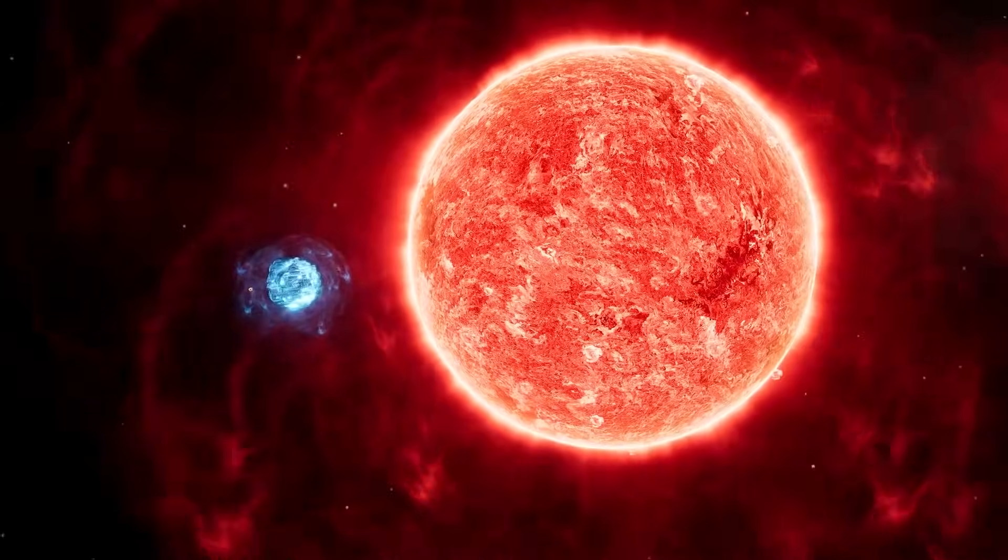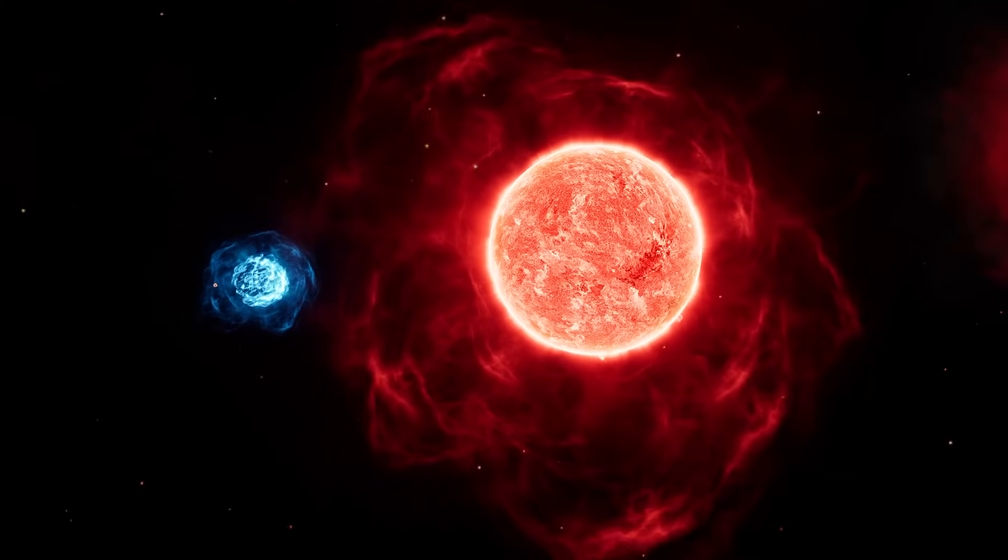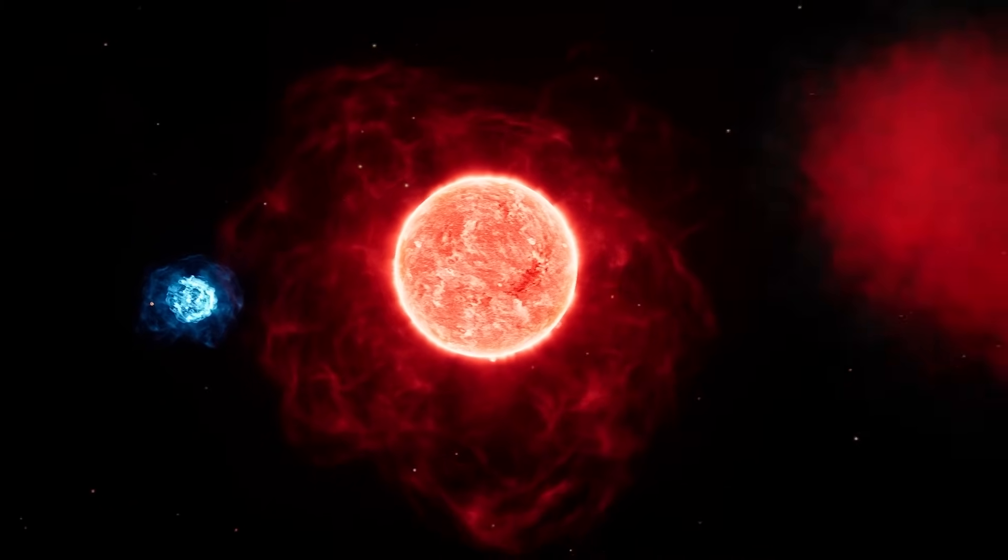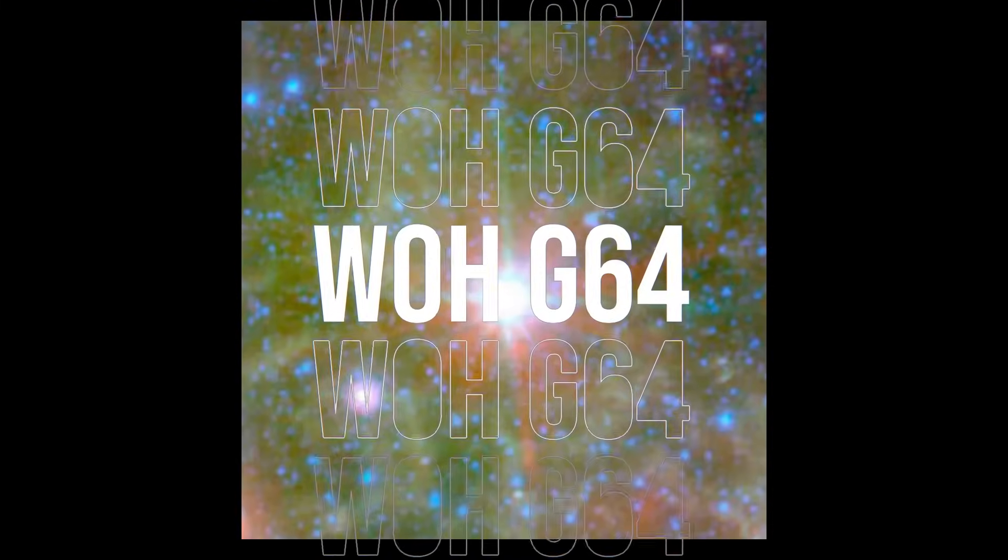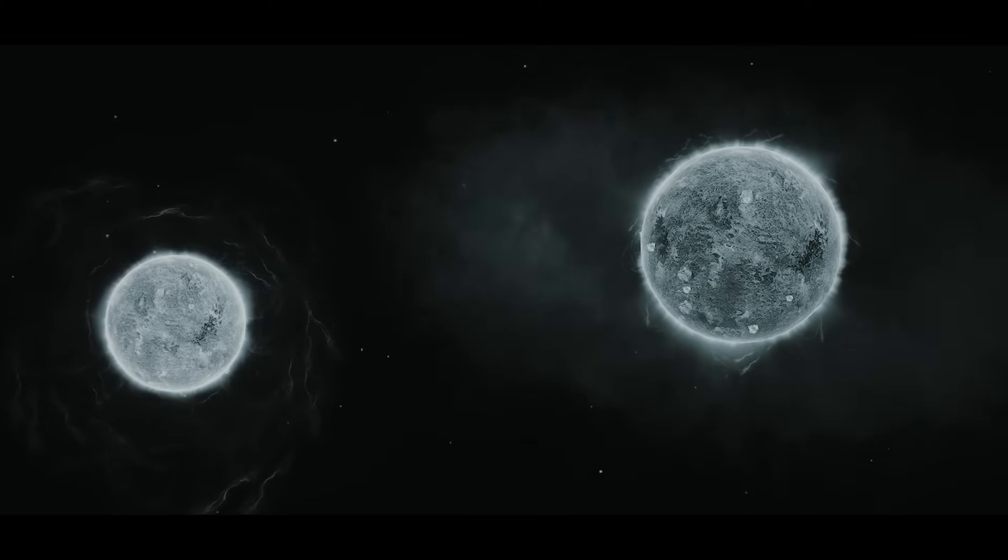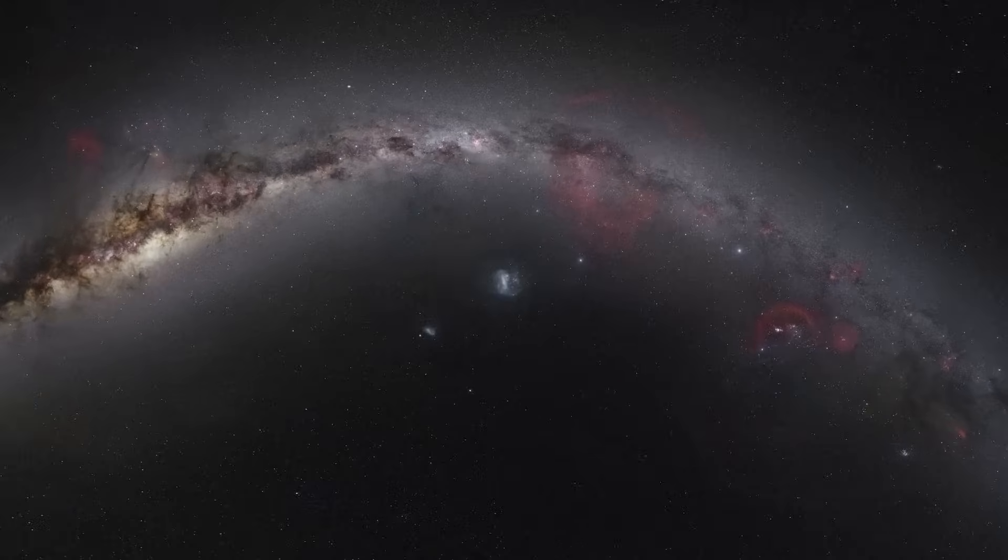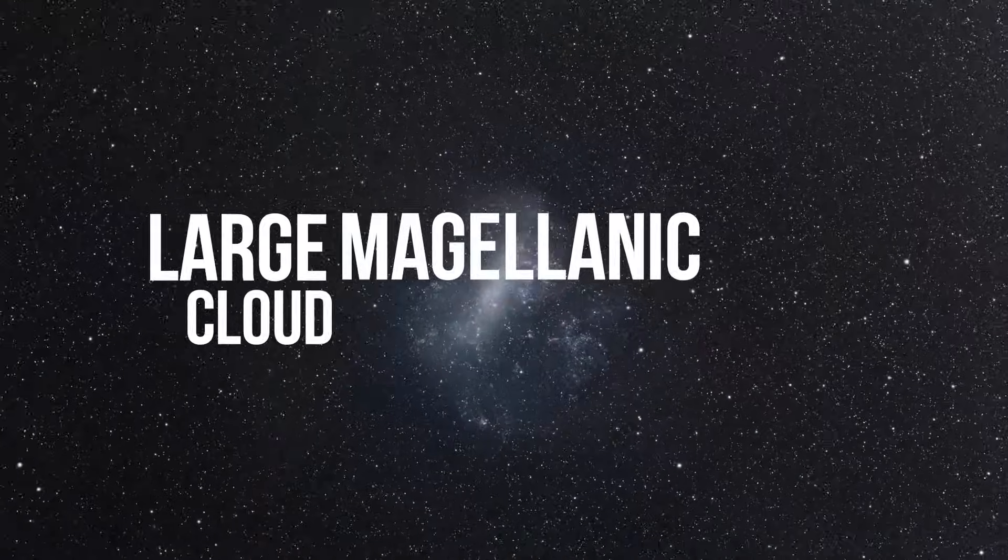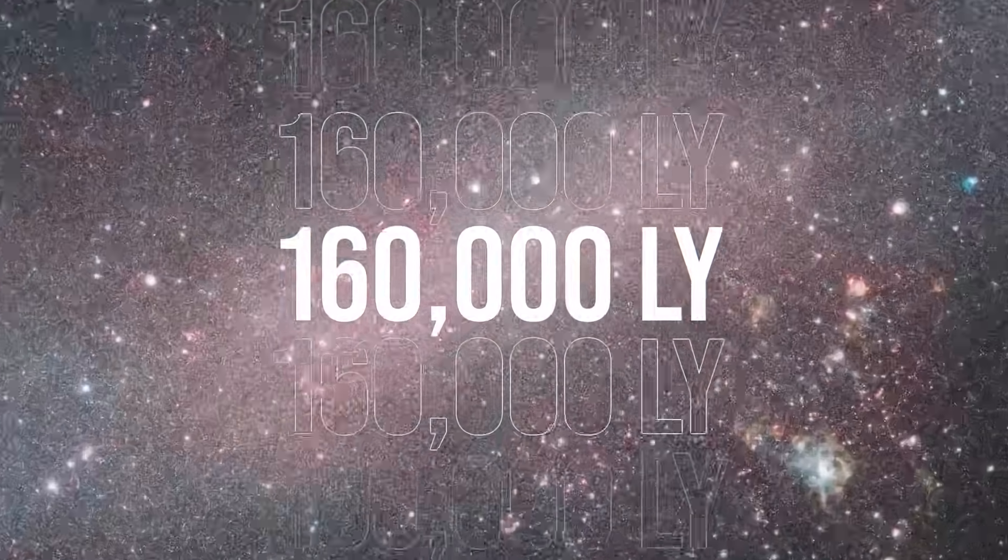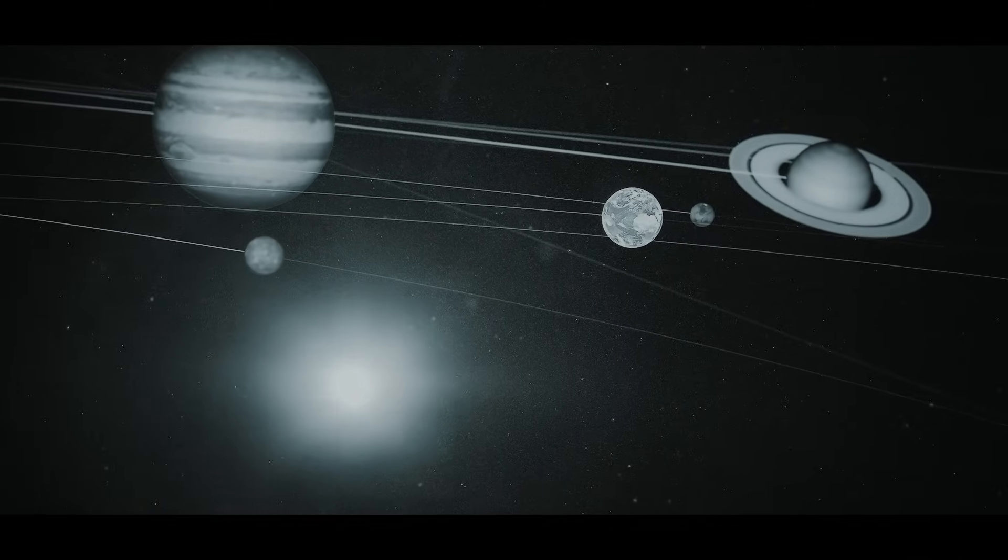That means the star UY Scuti could hold almost five billion of our Suns, or at least it could have if scientists hadn't made a mistake. In 2023, new measurements revealed that the star's radius was actually just 909 solar radii. So in 2024, the title of the largest star in the universe went to WOH G 64, whose radius is over one and a half thousand times larger than our Sun's.